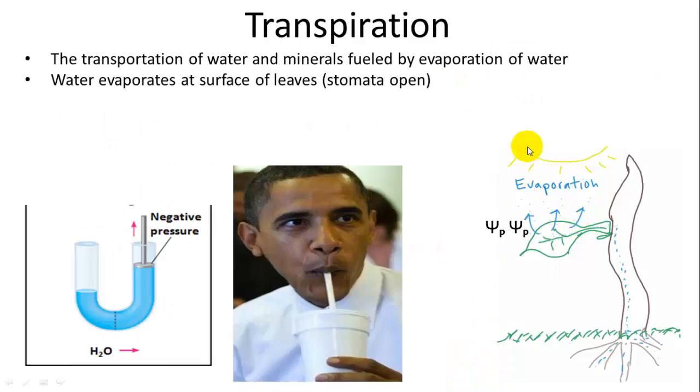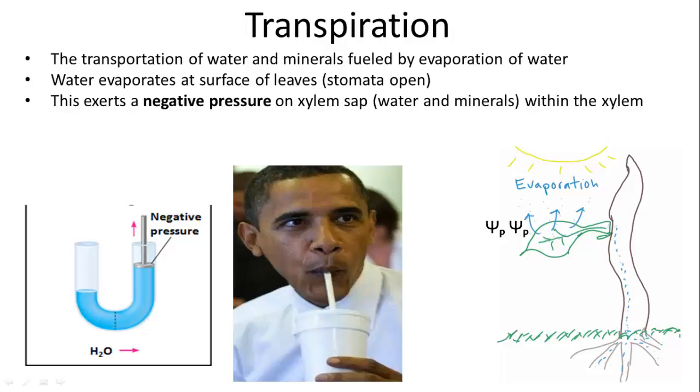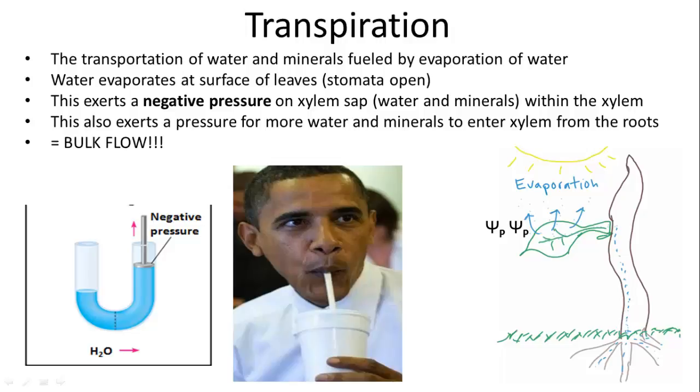Now, transpiration is the process by which water moves through plants, and it's fueled by evaporation by the sun. So water evaporates at the surface of leaves. That happens when stomata are open. And this exerts a negative pressure on the xylem sap, which has water and minerals within the xylem. And this also exerts a pressure for more water and minerals to enter the xylem from the roots. So then there's water in the soil that is then being sucked, basically, kind of like through a straw into the xylem and through the plant. Another name for this transport is called bulk flow, and it doesn't require energy other than the energy required by the sun.